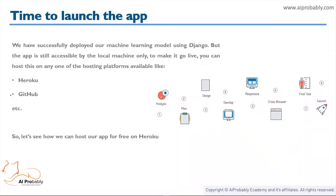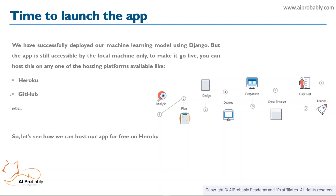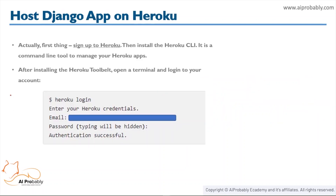We have successfully deployed a machine learning model using Django and we have also created a cool web application for the same, but the app is still accessible by the local machine only. To make it go live, we can host it on any of the hosting platforms like Heroku, GitHub, and others. So let's see how we can host our app on Heroku for free.